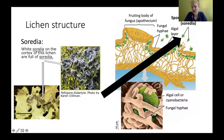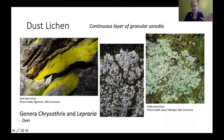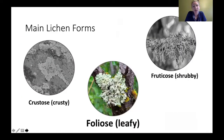Another crustose structure to know is the soredia — the spore-like structures that allow lichen to reproduce. They look almost like powder on the lichen surface, hence the name 'dust lichen.' The fluffy dust lichen is a very common one you can find on trees; it looks like a dusting of green and is also used for dyes.